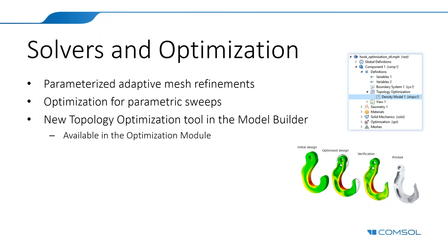Regarding virtual operations: there are two different ways of simplifying CAD geometry in COMSOL. One is to use geometry repair tools from the CAD Import Module, Design Module, and LiveLink products for CAD, which fundamentally change the underlying CAD geometry. The virtual operations instead create an abstraction layer between the CAD geometry and the mesher, so the mesher sees a simplified version. You can add multiple virtual operations to simplify geometry and improve meshing in a variety of ways — for example, reducing the presence of sliver faces, very thin surfaces that would create excessive mesh densities.